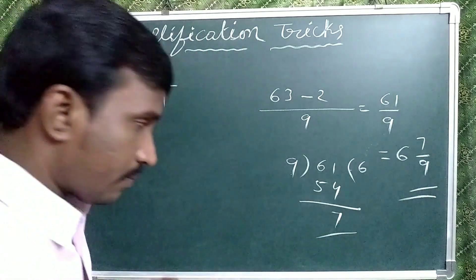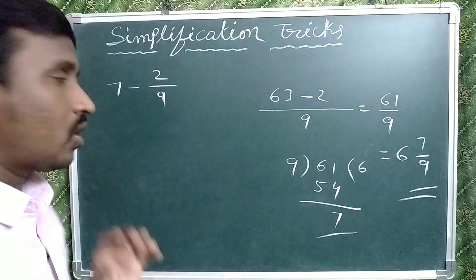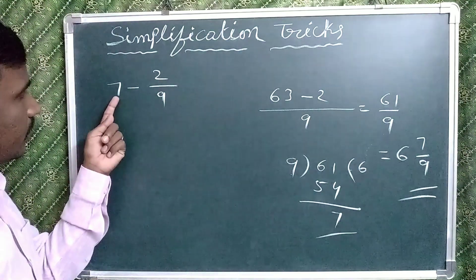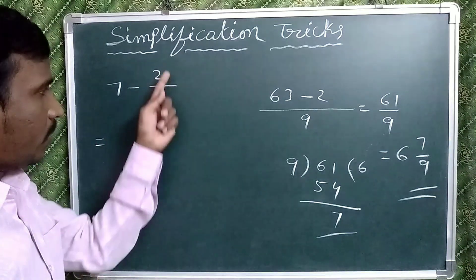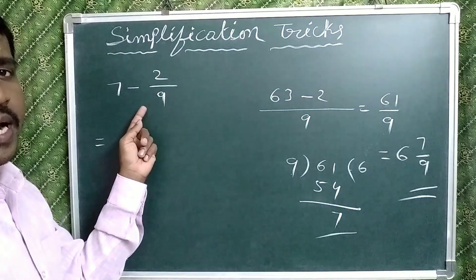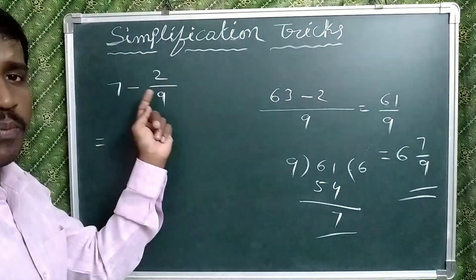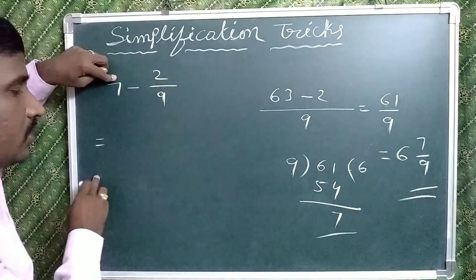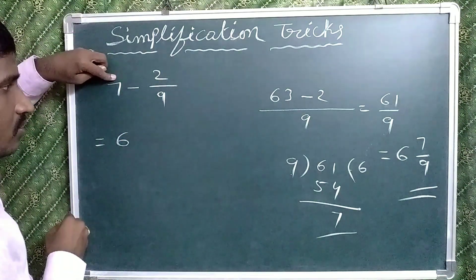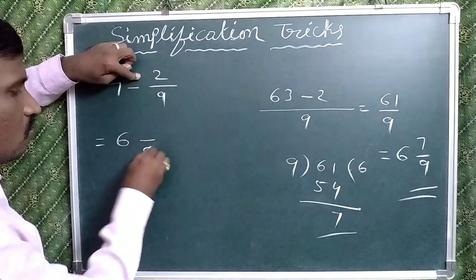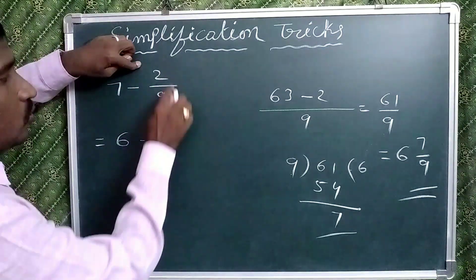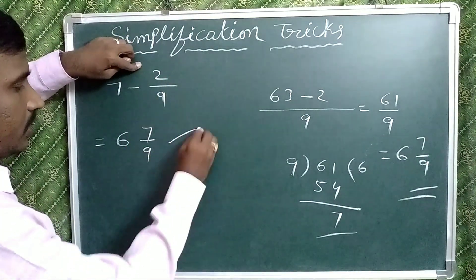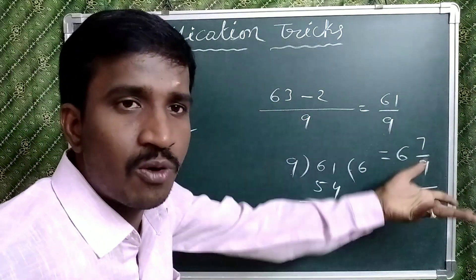But in our shortcut for 7 minus 2 by 9 — whole number minus a proper fraction — write the number before 7, which is 6. Keep the same denominator 9. What is the difference between 9 and 2? That is 7. So the answer is 6 and 7 by 9. That is the shortcut.